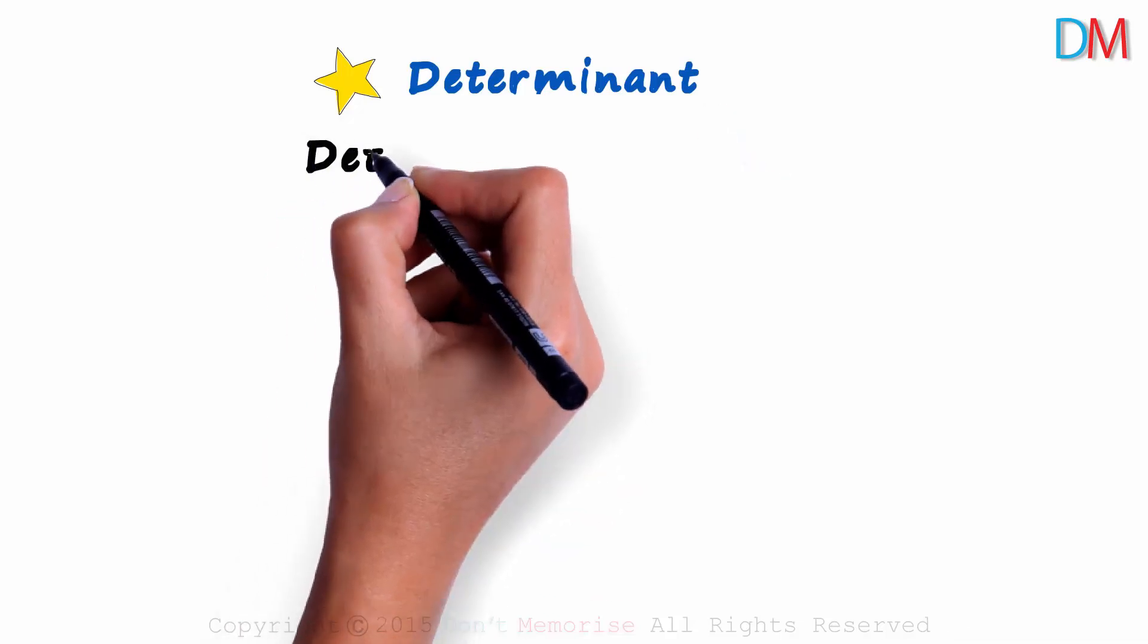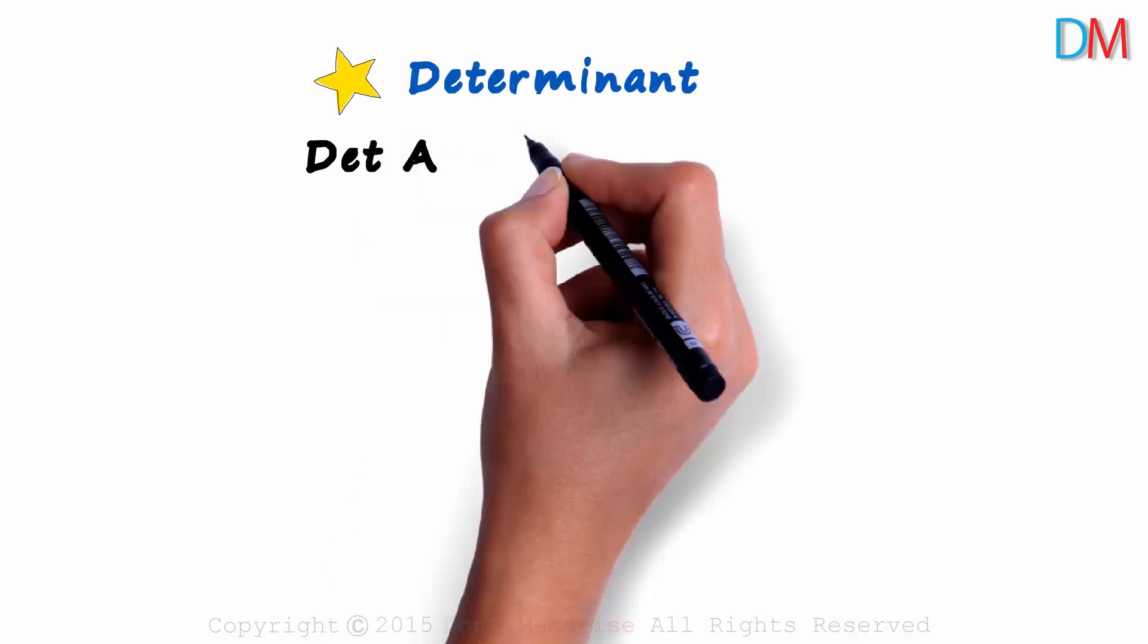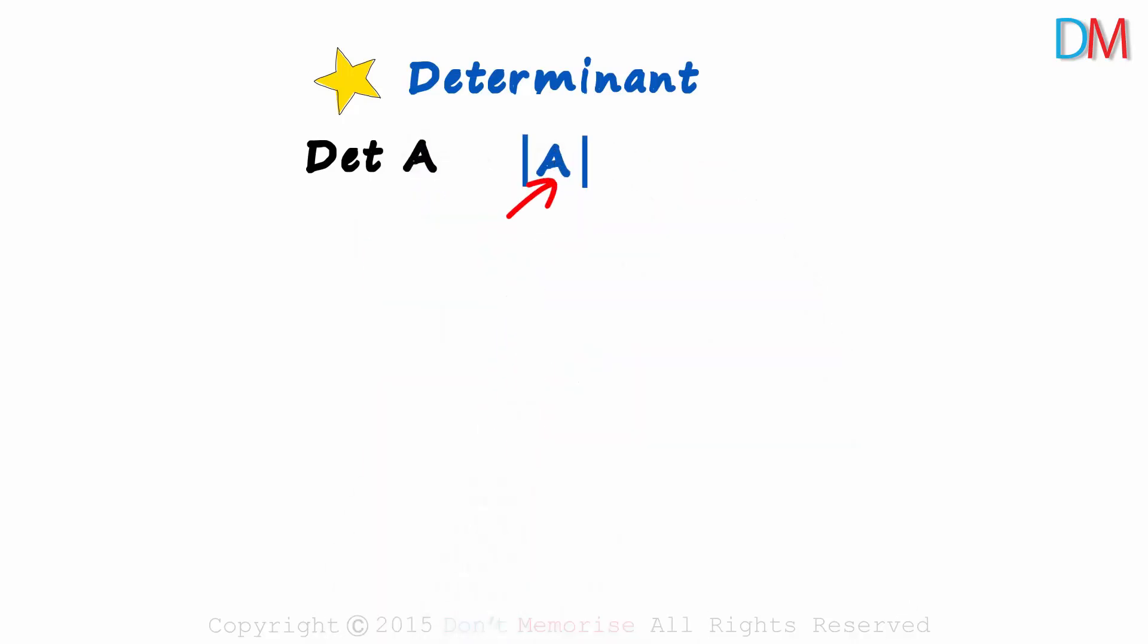How do we write the determinant of matrix A? It's written like this: A between two vertical bars. This is the determinant of A.